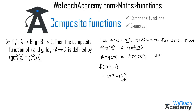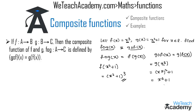Now for g circle f of x, we have g of f of x where f of x is x cube. We find g of x cube by replacing x with x cube in g of x equals x square plus 1, giving us x cube whole square plus 1, which equals x power 6 plus 1. So f circle g of x equals x square plus 1 whole cube, and g circle f of x equals x power 6 plus 1.